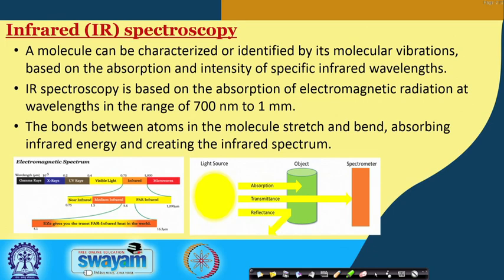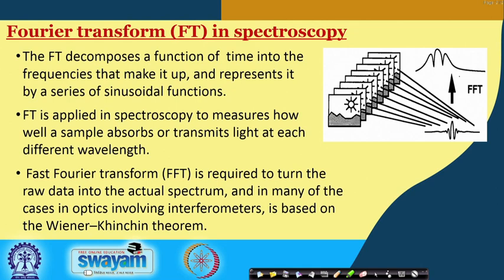The bonds between the atoms in the molecule stretch and bend, absorbing infrared energy and creating the infrared spectra. This is in brief the principle of this method. Regarding Fourier transform in spectroscopy, the Fourier transform decomposes a function of time into the frequencies that make it up and represents it by a series of sinusoidal functions. Fourier transform is applied in spectroscopy to measure how well a sample absorbs or transmits the light at each different wavelength. The fast Fourier transform is required to turn the raw data into the actual spectrum, and in many cases in optics involving interferometers, the fast Fourier transform is based on the Wiener-Khinchin theorem.